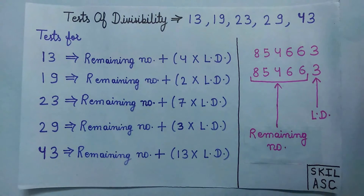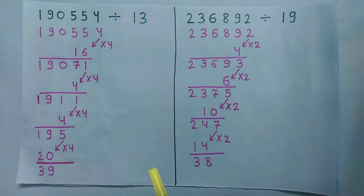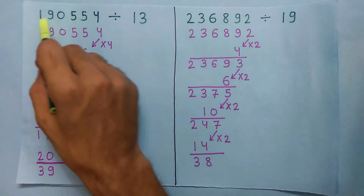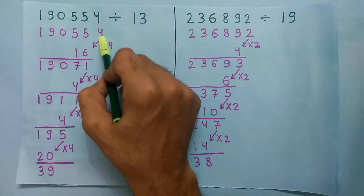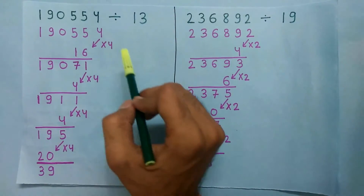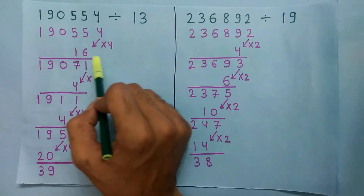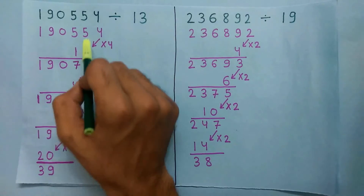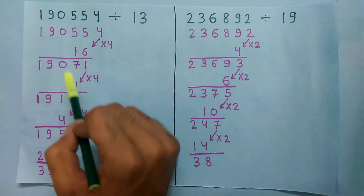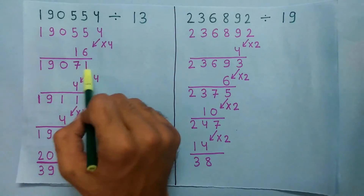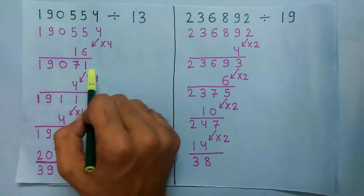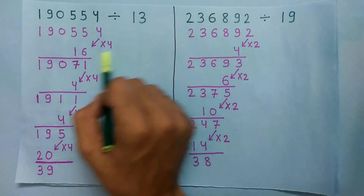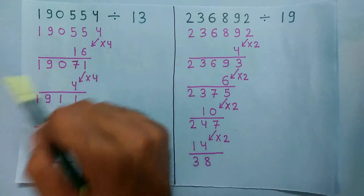To better understand this, let's take an example. To check if this number is divisible by 13 or not, multiply the last digit by 4 and we get 16. Now add this 16 to the remaining number and we get this number. Now this number is again a large number, so we will repeat this process until we get a small number.